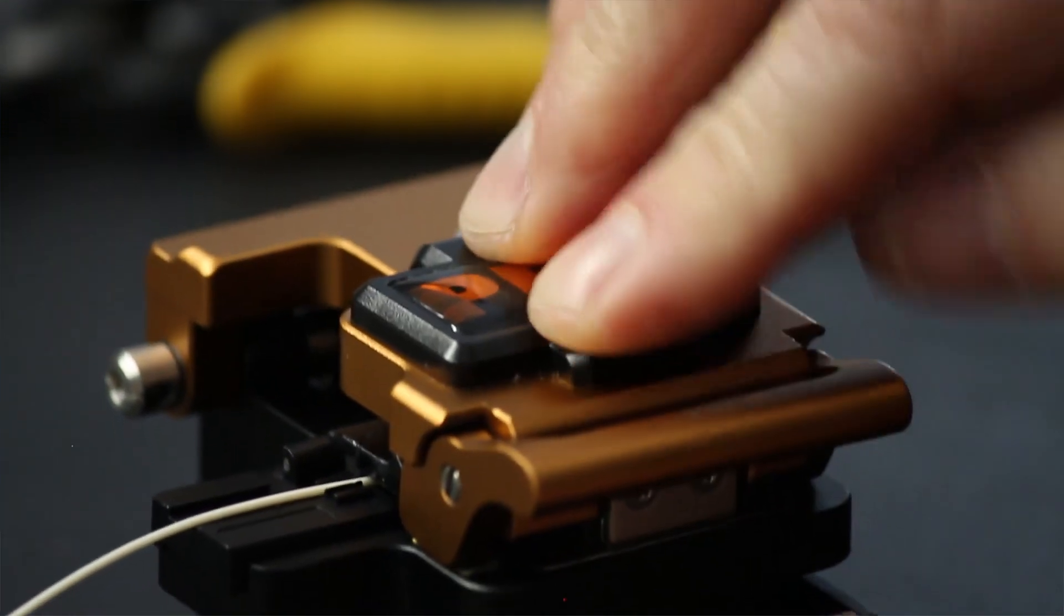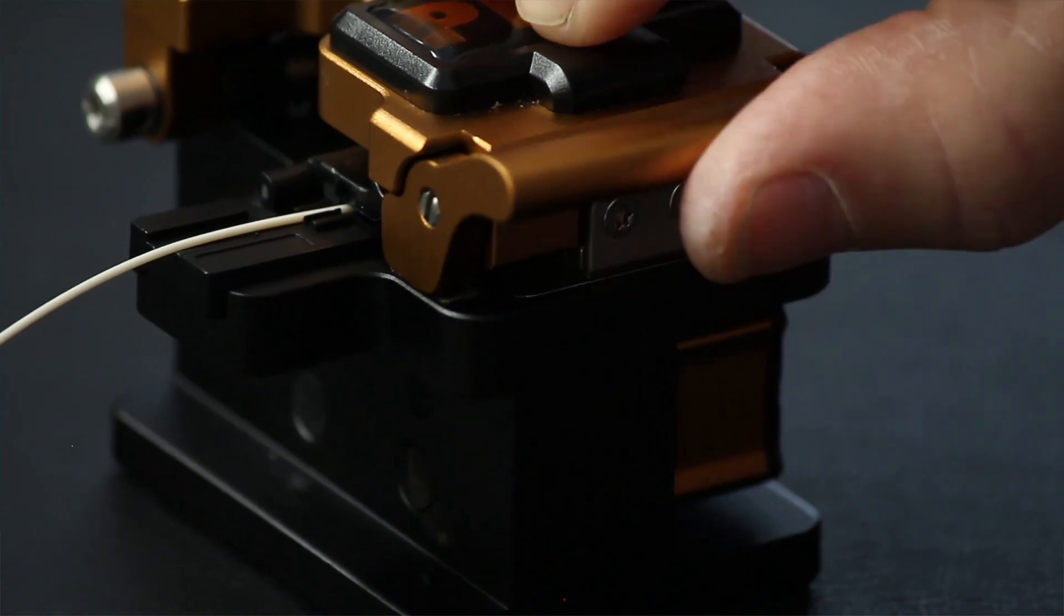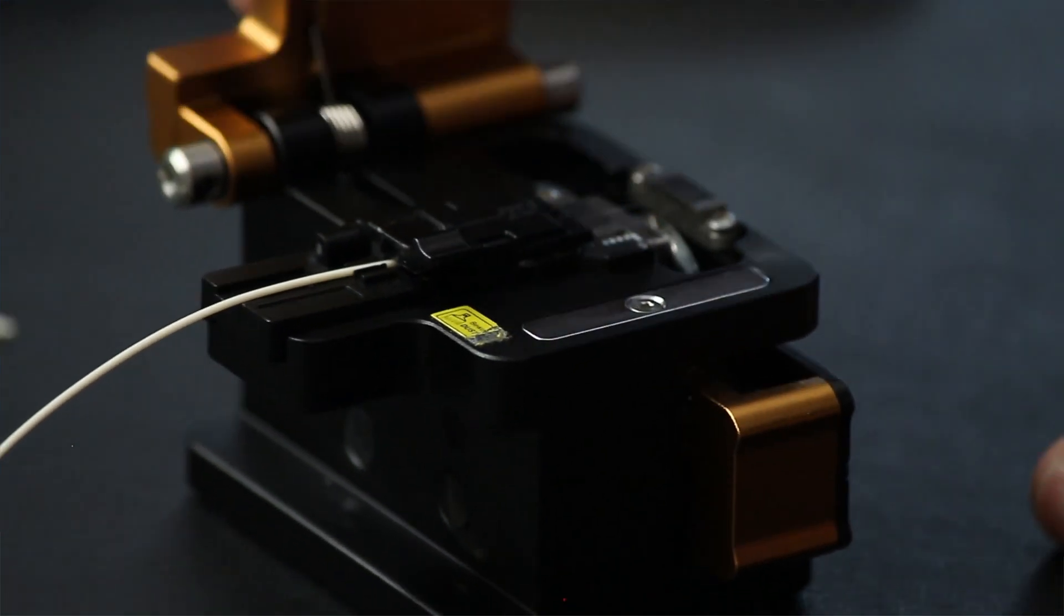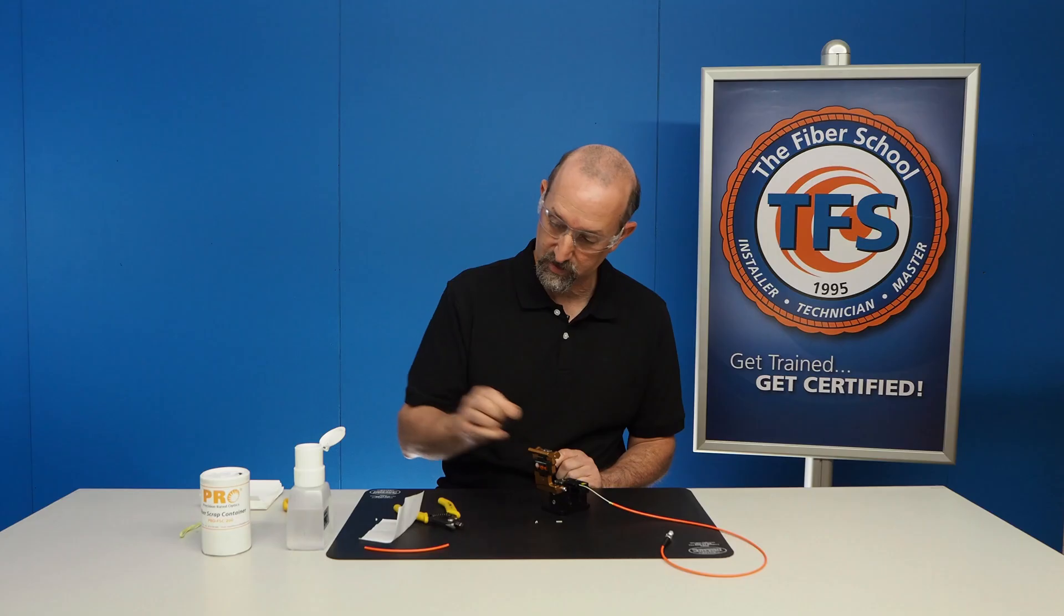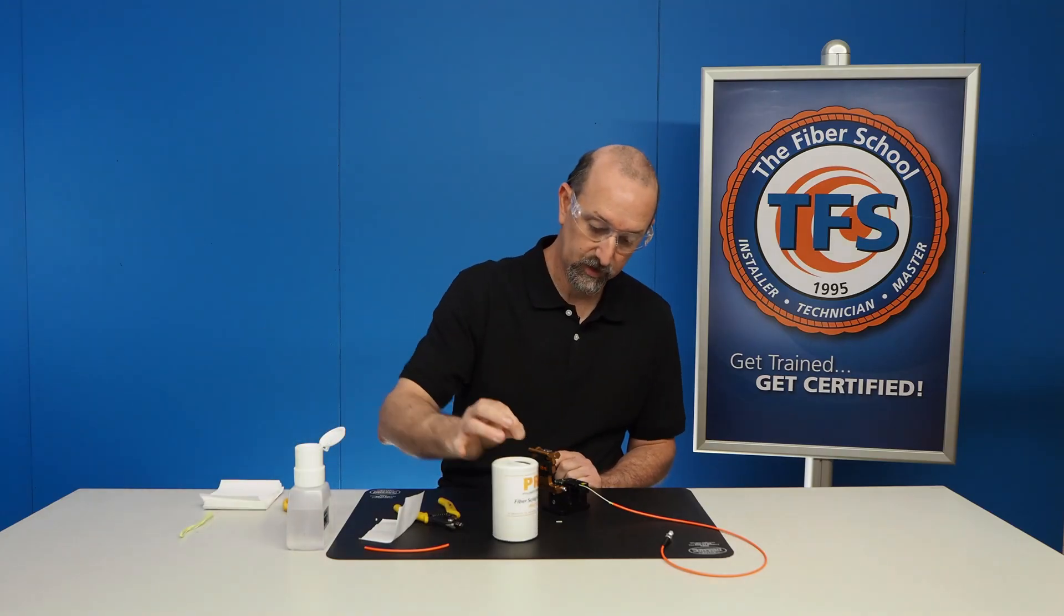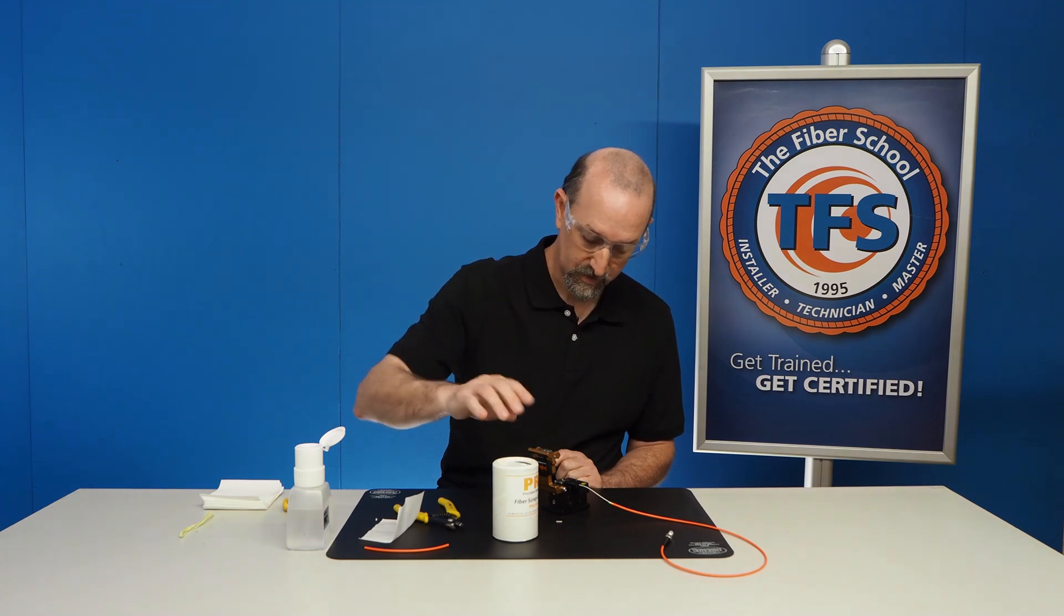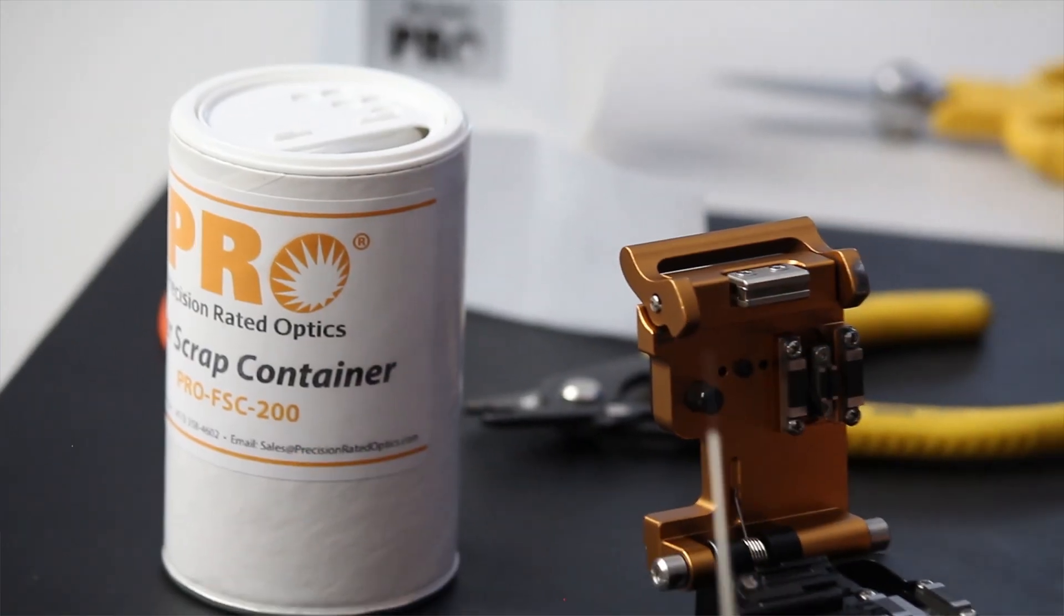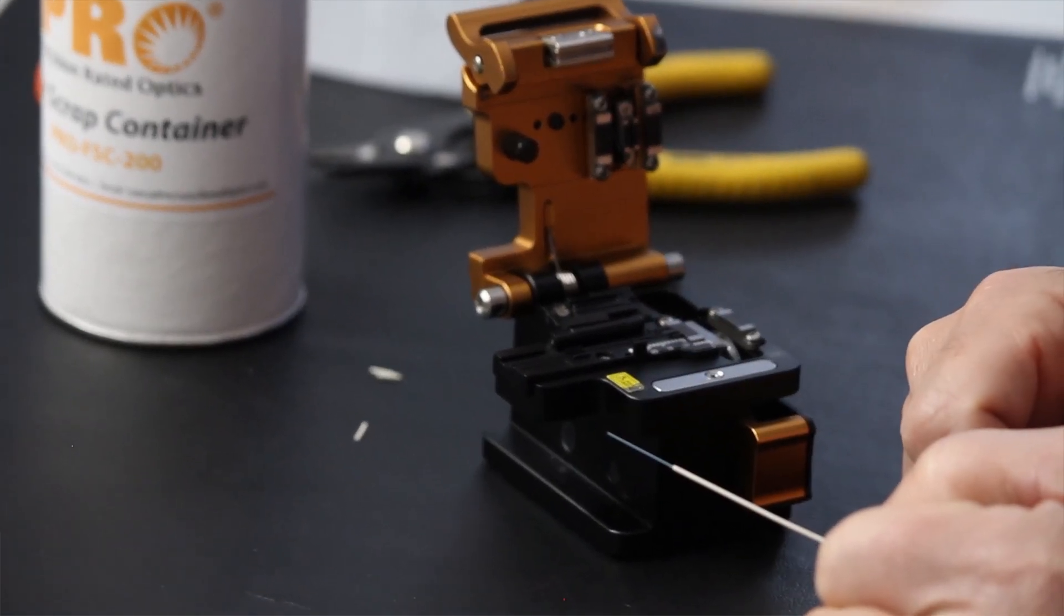Put this down until it clicks. Push this through. Now we bring up the lid. The fiber is cleaved. Here's our piece of fiber. Obviously, you always put it in your scrap can, so fiber shards aren't laying around. And that's done. That's your cleaved fiber at 16 millimeters. Thank you.